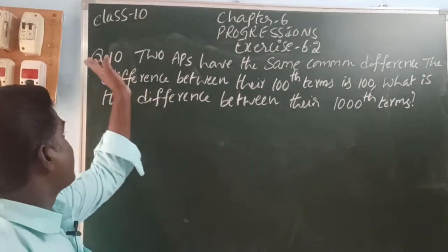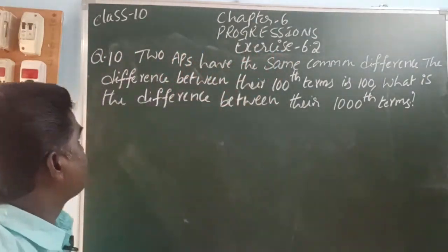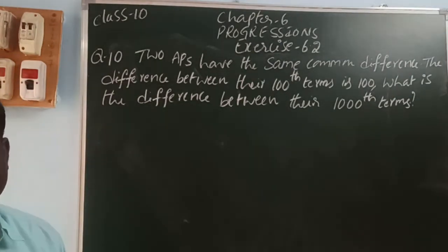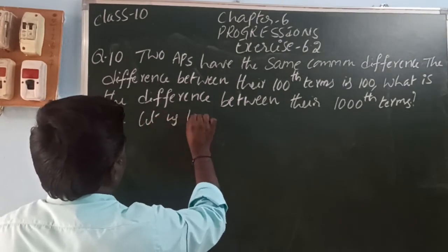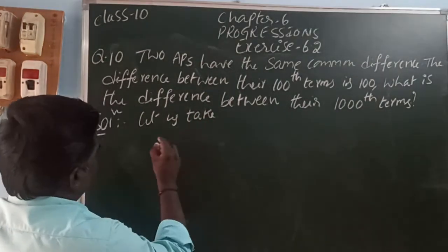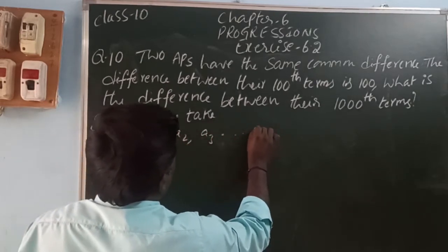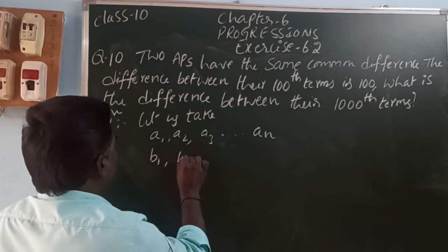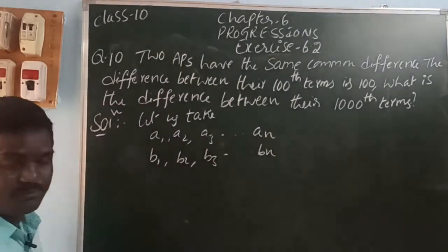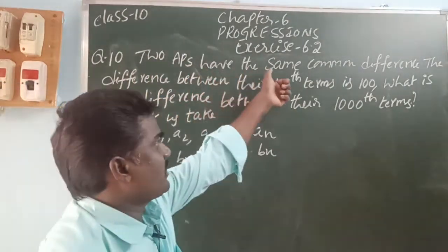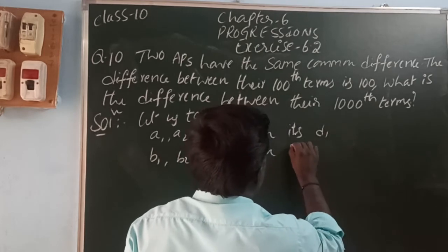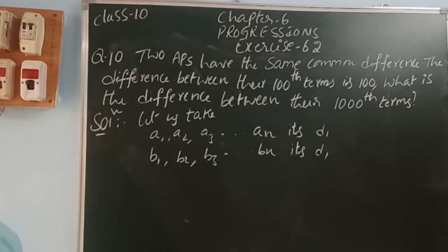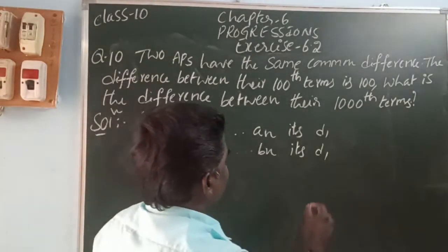Next, question number 10. Two APs have the same common difference. The difference between their hundredth terms is 100. What is the difference between their thousandth terms? So, here, let us take: A1, A2, A3, and so on, AN — this is one AP. Next, B1, B2, B3, and so on, BN — this is another AP. So, the two APs have the same common difference. Let us take the common difference as D1 for both. The common difference of the first AP is A2 minus A1, and the second is B2 minus B1.